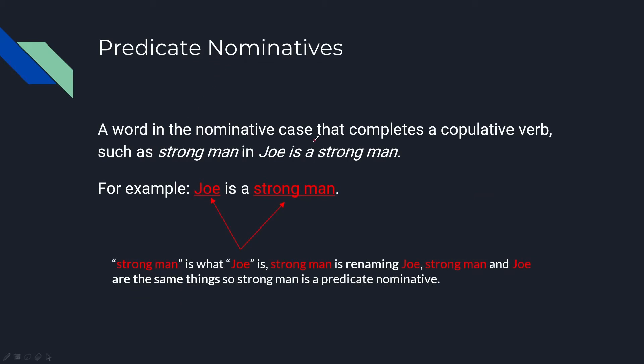Predicate nominatives: A word in the nominative case that completes a copulative verb, such as 'strong man' in 'Joe is a strong man.' For example, 'strong man' is what Joe is. 'Strong man' is renaming Joe. 'Strong man' and 'Joe' are the same thing, so 'strong man' is a predicate nominative.